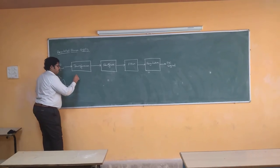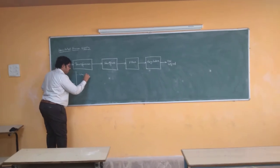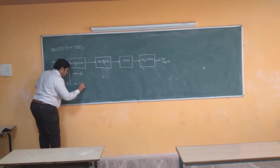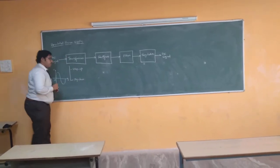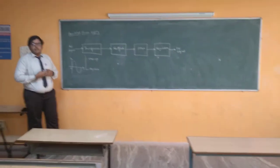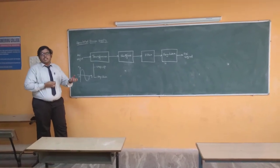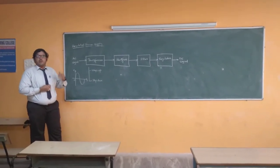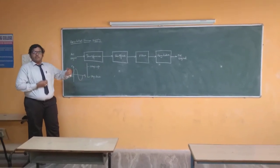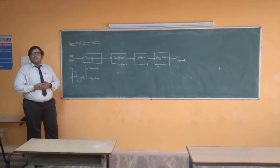The transformer is classified into two basic types: one is a step-up transformer, another one is a step-down transformer. The step-up transformer increases the voltage of the input signal so that the output signal will be a very high voltage. For example, if we have a 10-volt input signal given to a step-up transformer, it can increase that 10 volts into 100 volts. That is the basic operation of a step-up transformer.